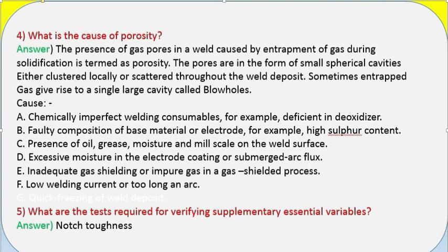Continued causes of porosity: (c) presence of oil, grease, moisture, and mill scale on the weld surface; (d) excessive moisture in the electrode coating or submerged arc flux; (e) inadequate gas shielding or impure gas in a gas-shielded process; (f) low welding current or too long an arc; (g) quick freezing of weld deposit. Question 5: What are the tests required for verifying supplementary essential variables? Answer: Notch toughness.